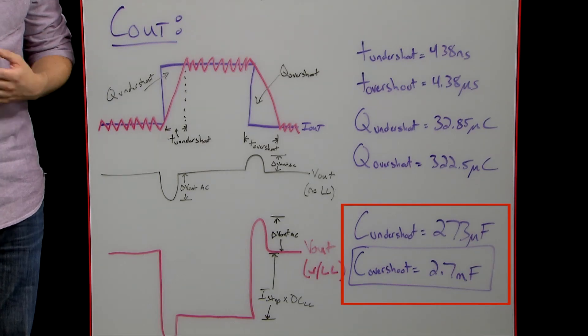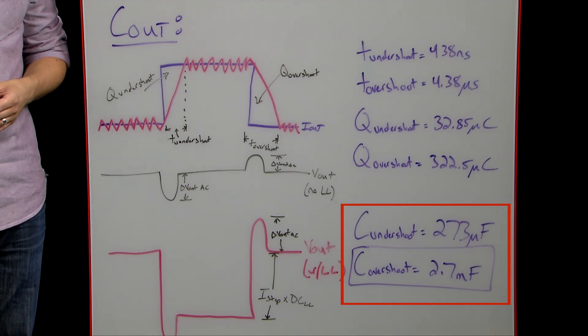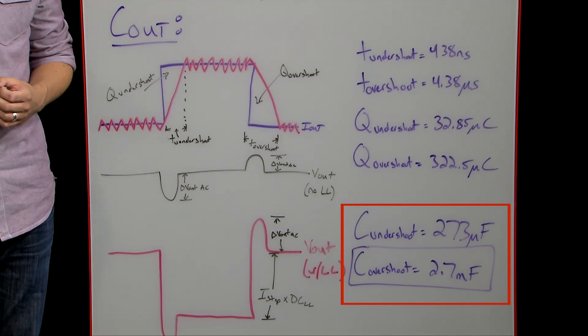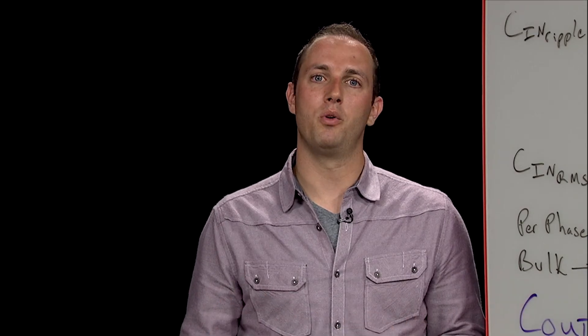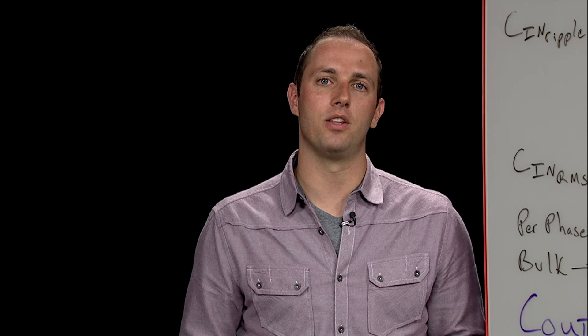Plugging in the numbers, we get 273 microfarads of capacitance to hit the undershoot spec and 2.7 millifarads of capacitance to hit the overshoot spec. But before we move on, it's important to understand why the overshoot comes out so much higher than the undershoot.